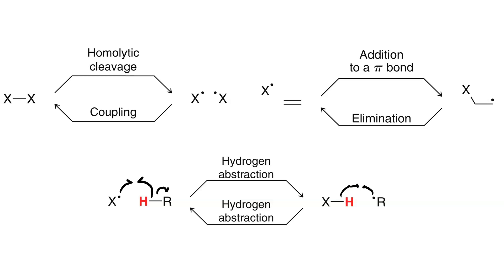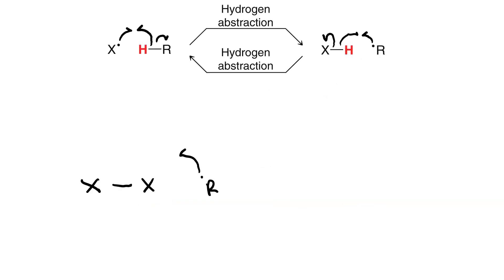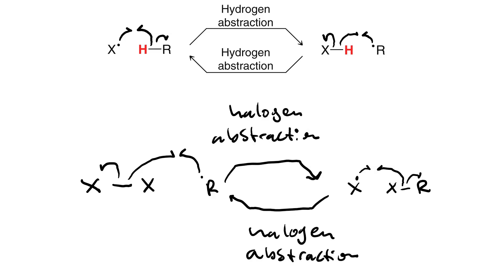If we run that in reverse, there's the R fragment abstracting the hydrogen, and we're reforming the X-radical. In this reaction, I have a radical abstracting a halogen from a halogen molecule, and this gives me a new halogen radical plus an R-X bond. That's halogen abstraction. But if I run it in reverse, that is also halogen. So, just as hydrogen abstraction is the reverse of hydrogen abstraction, halogen abstraction is the reverse of itself, too.